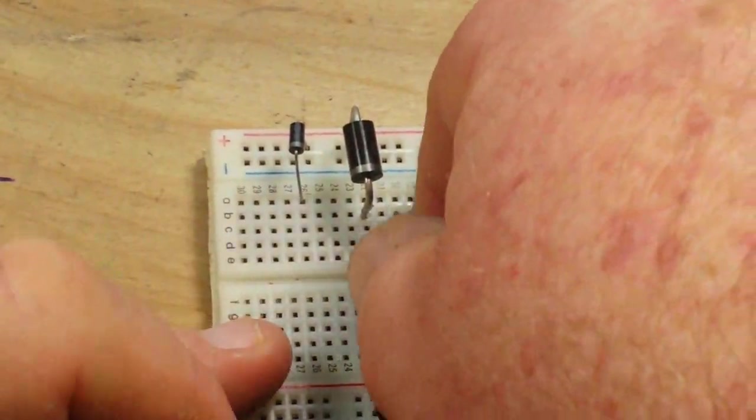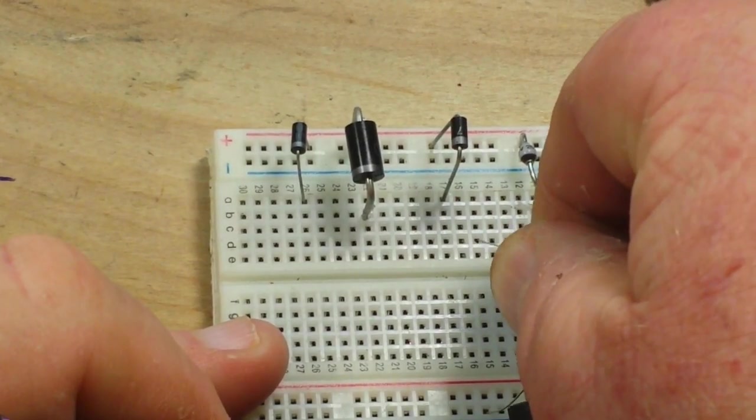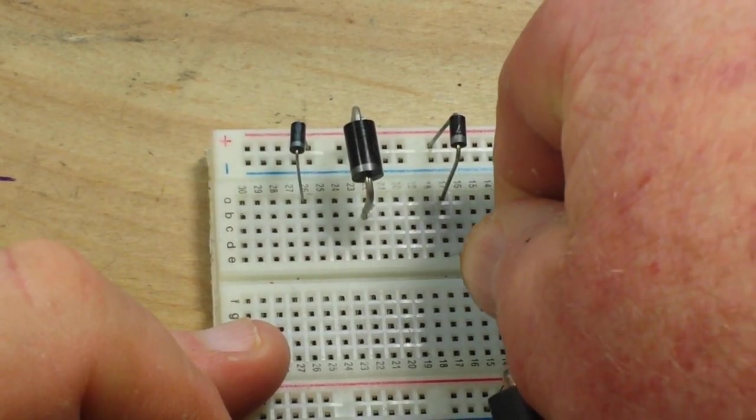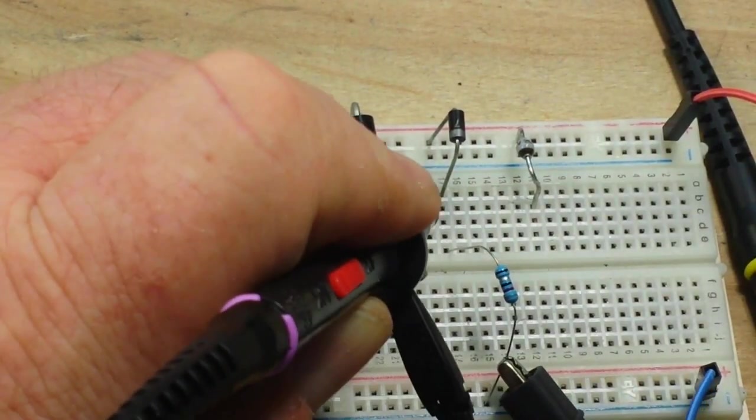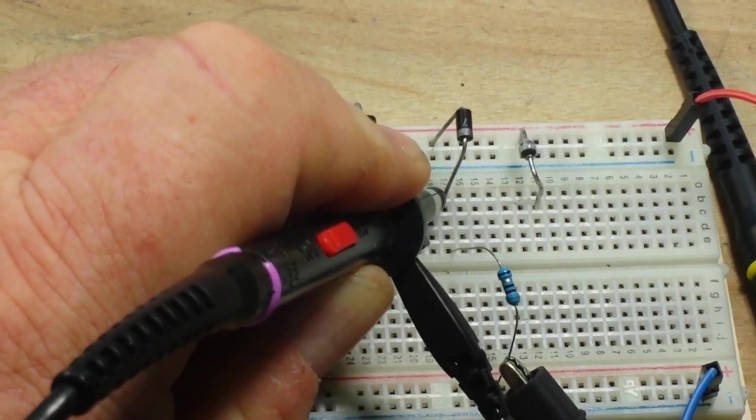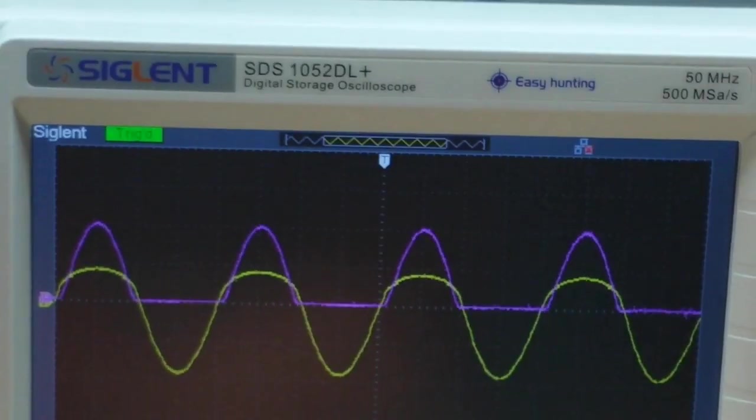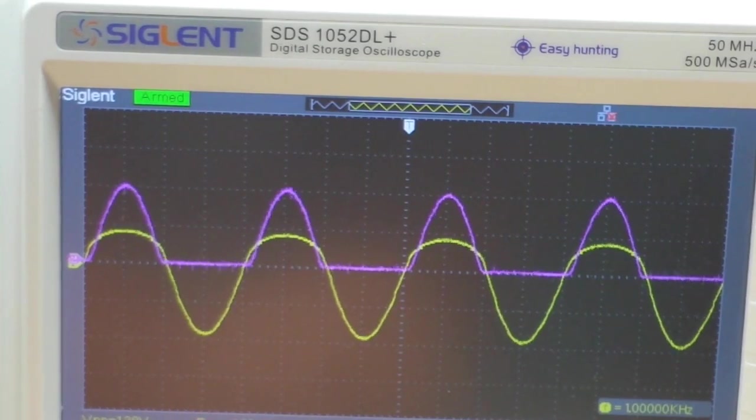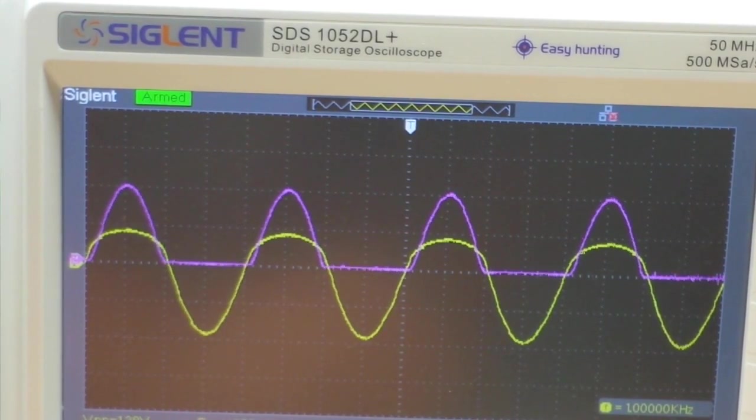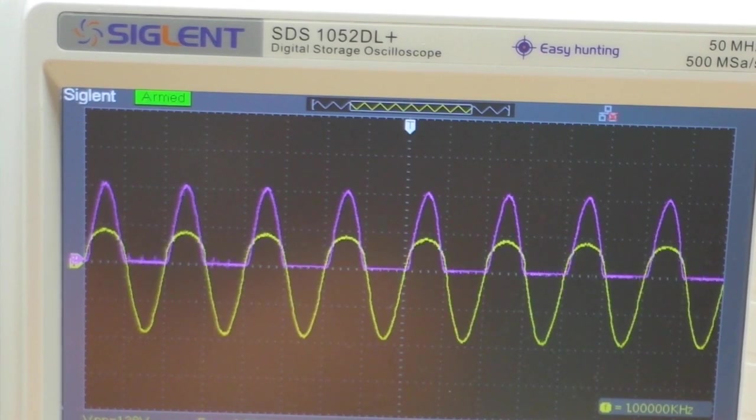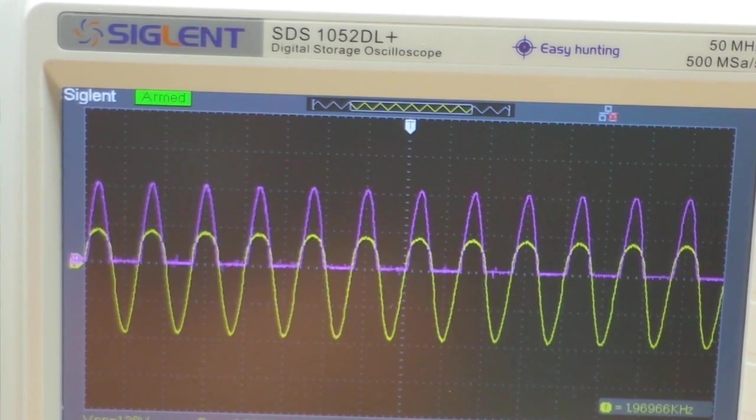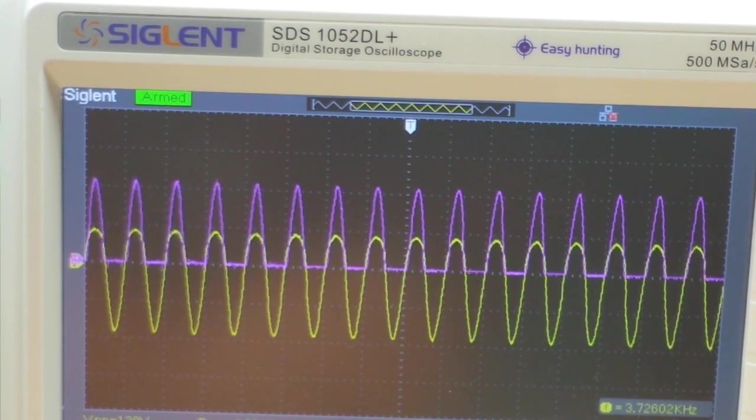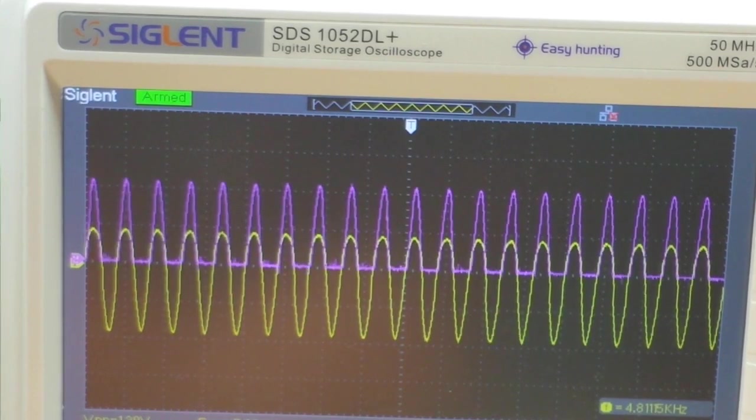And we'll probe the output from the Schottky. And everything looks pretty much hunky dory at one kilohertz. Let's take it up two, three, four, five. Let's go up to 10.